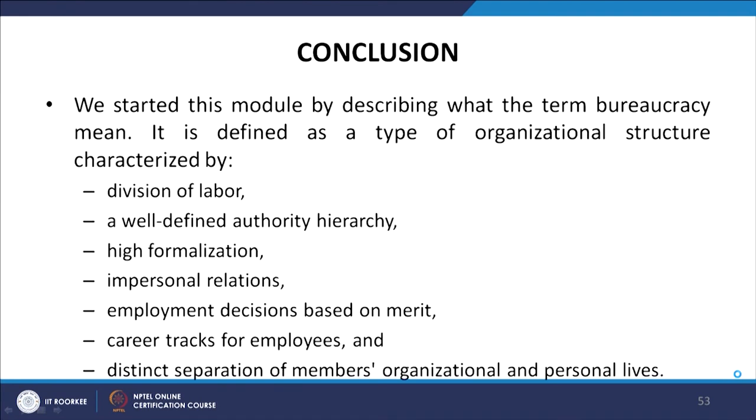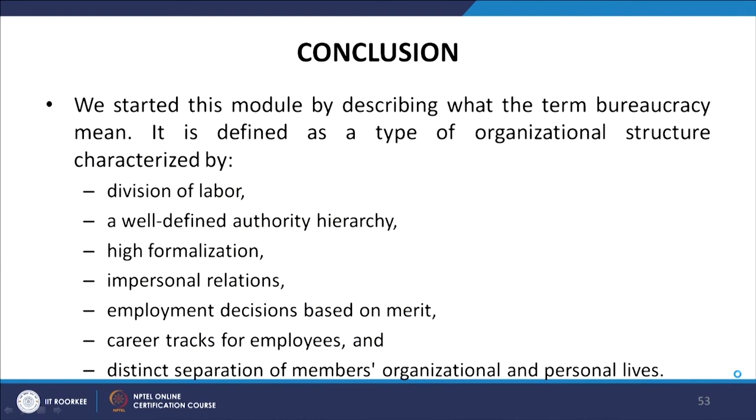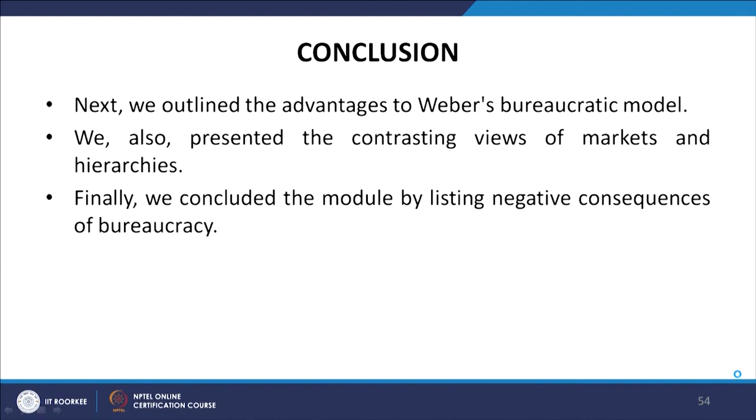To conclude this module: we started by describing what the term bureaucracy means — a type of organization structure characterized by division of labor, a well-defined authority hierarchy, high formalization, impersonal relations, employment decisions based on merit, career tracks for employees, and distinct separation of members' organizational and personal lives. Next we outlined the advantages of Weber's bureaucratic model, presented the contrasting view of markets and hierarchies, and concluded by listing negative consequences of bureaucracy. These are the four books from which the material for this module was taken. Thank you.